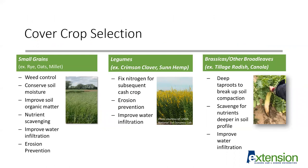We can group cover crops into three categories when thinking about benefits. The first and most prominent category in Alabama would be small grains — such as rye and oats for winter cover crops, or millet and sorghum sudangrass for summer cover crops. These are excellent at producing very high biomass, especially when planted in a timely manner. This high biomass can help with weed suppression in the early season, conserve soil moisture, improve soil organic matter, support nutrient scavenging with their root systems, and help prevent erosion.